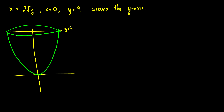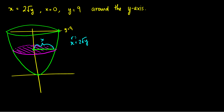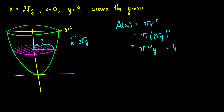What does a cross-sectional area look like here? The radius is the distance from the y-axis to the curve, and x equals 2 root y. So the radius here is not y this time, but x — it is the x-distance. And x equals 2 times root y, so the radius equals 2 root y. For the area of this cross-section, it's pi r squared. Substituting 2 root y for r gives pi times (2 root y) squared, which simplifies to pi times 4y, or 4 pi y.